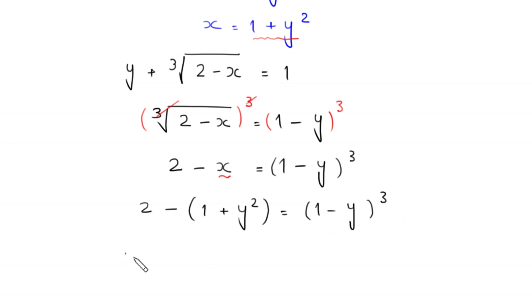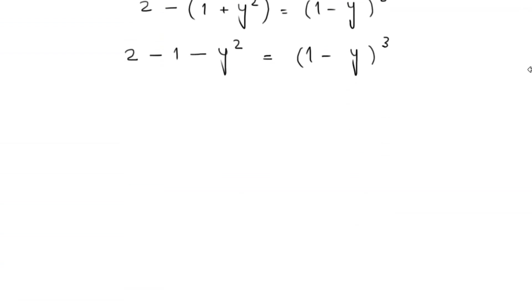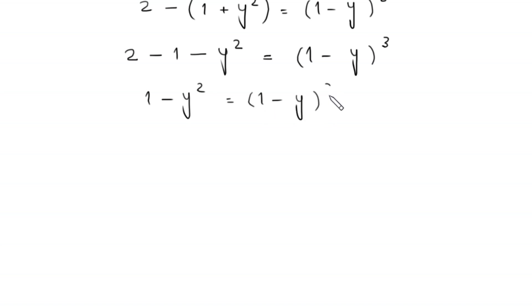Expanding the left side: 2 minus 1 is 1, and negative times y squared gives negative y squared, so we have 1 minus y squared is equal to 1 minus y whole cubed.